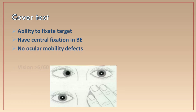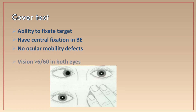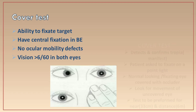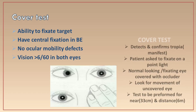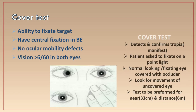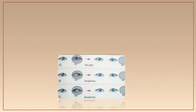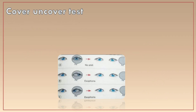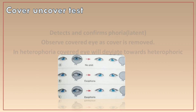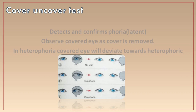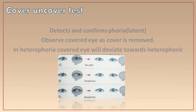The cover test is performed at both 6 meters and 33 centimeters. For tropia: if the patient has esotropia and you cover the good eye, the deviating eye — which was turned inward — will shift toward the temporal side, confirming tropia. The cover-uncover test is also used to detect and confirm latent phoria. One eye is covered for five to ten seconds; as the cover is removed, observe whether there is eso- or exophoria.